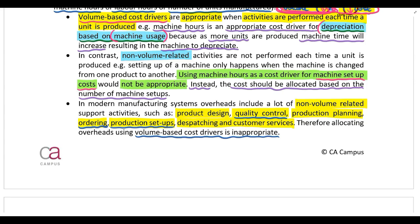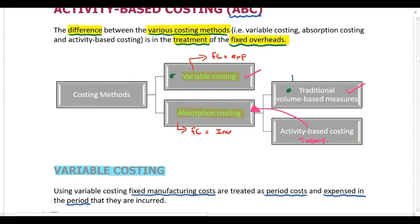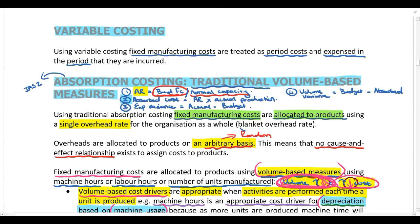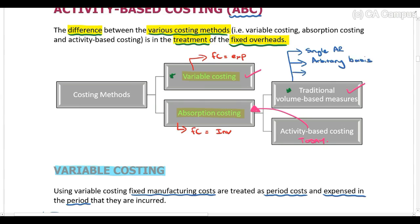To summarize: with traditional absorption costing, we calculate one single allocation rate — a blanket rate — for the company as a whole. That rate is calculated on an arbitrary or random basis. We don't look at what the overhead cost is made up of or try to identify appropriate cost drivers with a cause-and-effect relationship. Instead, we just use units, machine hours, or labor hours, and we only use volume-based measures.